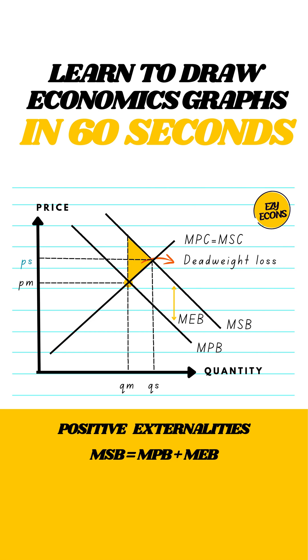Since QM is less than QS, the good is under-consumed, leading to market failure and a deadweight loss.